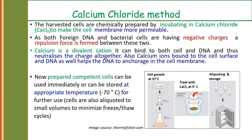We will now discuss the first method: the calcium chloride method, also called the chemical method of transformation. The harvested cells are chemically prepared by incubating in calcium chloride to make the cell membrane more permeable. Since both the foreign DNA and the bacterial cells carry negative charges, a repulsion force is formed between them. Calcium is a divalent cation, so it can bind to both the negatively charged cell and the DNA, neutralizing the charge. The calcium ions bound to the cell membrane, cell surface, and DNA help the DNA enclose within the cell membrane. The prepared competent cells can be used immediately or stored at minus 70 degrees centigrade for further use. Cells can also be aliquoted to small volumes to minimize freeze-thaw cycles.